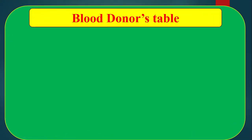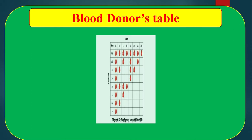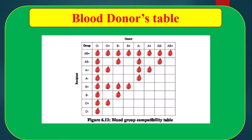Blood donors table. There is a table of blood donors. Normally we say that blood group AB can receive from all and blood group O can donate to all, but there are some exceptions and limitations which are shown in this table.